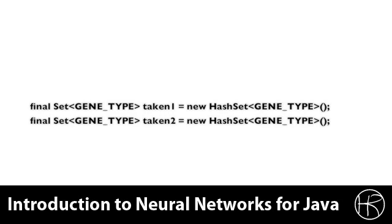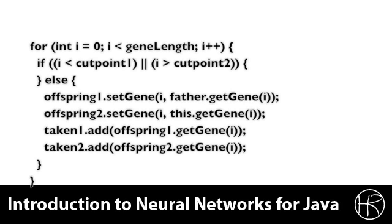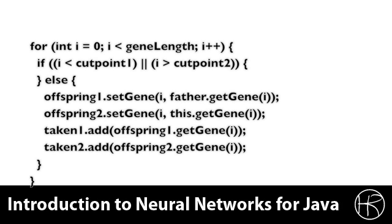Now with a neural network where the genes are going to just be individual rows and columns from the weight matrix, it's perfectly acceptable to repeat numbers because neural networks will often repeat weights throughout their weight matrix. The taken one and two simply allow genetic algorithms where you do not want repeats to keep track of which individual numbers have been taken. Now we're actually ready to cut the two parents and create the genetic material that's going to be used for the child offspring.